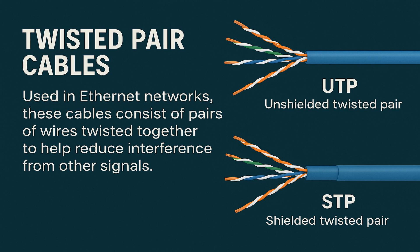Next is coaxial cable, or coax. This one's a bit old school, but still used in some internet and cable TV setups. It has a single copper conductor in the centre, surrounded by insulation, shielding, and an outer cover. Coax is more resistant to interference and can carry data over longer distances than twisted pair, but it's bulkier and not as flexible in modern networking setups. Think of it as the tank of network cables — strong and reliable, but not exactly sleek.